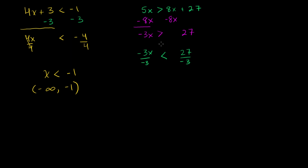As a way to remember: greater than — the left-hand side just looks bigger; that height is greater than the right side, which is just a point. Less than — the little point is less than the distance of the big opening. Anyway, now that we divided both sides by negative 3 and swapped the inequality from greater than to less than, the negative 3's cancel out. You get x is less than 27 over negative 3, which is negative 9. In interval notation, it would be everything from negative infinity to negative 9, not including negative 9.